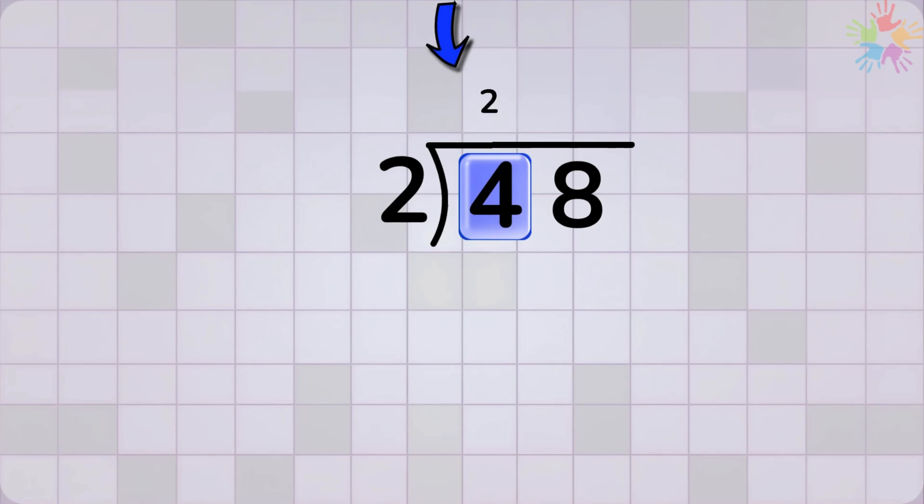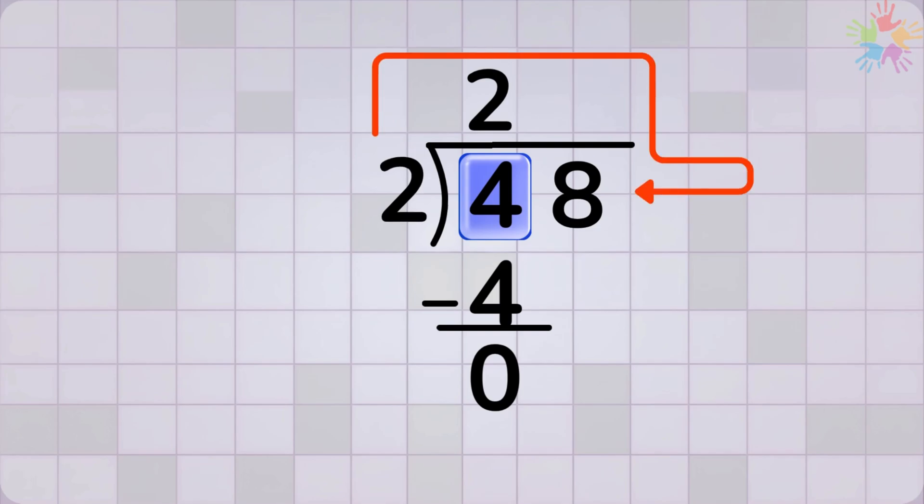Then we multiply 2 times 2, which equals 4. Then we subtract. 4 minus 4 equals 0. Now here comes the tricky part. At first glance, you might think we have to ask how many times does 2 go into 8? But this time, we have to bring down instead. Now we bring down the next digit, which is 8.